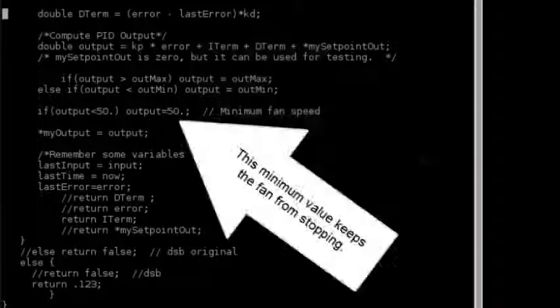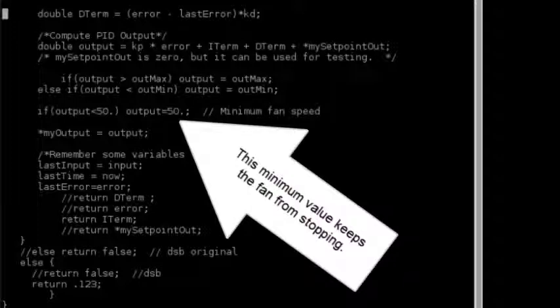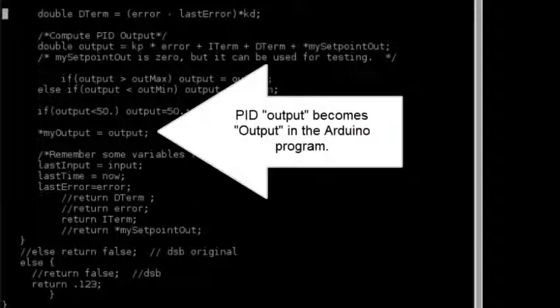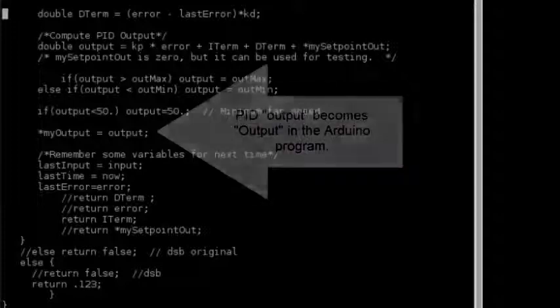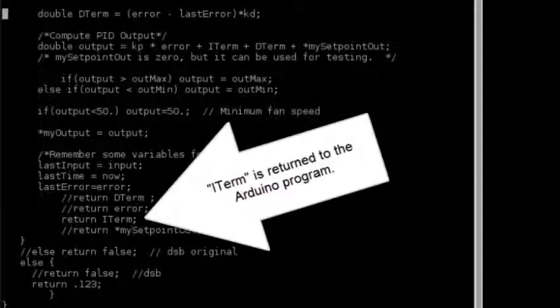This minimum value keeps the fan from stopping. PID output becomes output with a capital O in the Arduino program. iTerm is returned to the Arduino program.